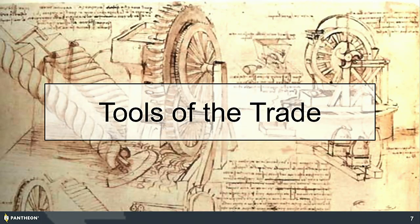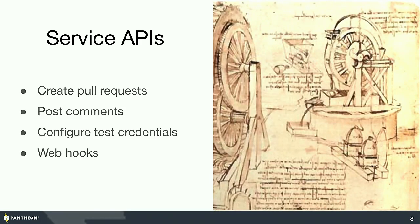In this presentation, I'm going to talk about the tools of the trade — things you can use to get your automation in gear. We have service APIs available from web applications we all use and love, like GitHub, CircleCI, and Travis. These have APIs that let you do things like creating pull requests, posting comments on pull requests, configuring your credentials so your tests start up, and various webhooks.